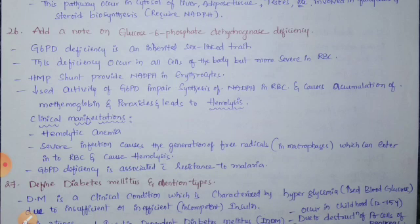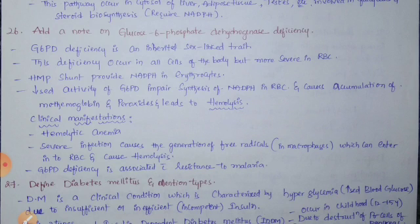HMP shunt provides NADPH in erythrocytes. Decreased activity of glucose-6-phosphate dehydrogenase (G6PD) is an inherited X-linked trait. This deficiency occurs in all cells of the body but is more severe in RBCs. Decreased G6PD activity reduces NADPH synthesis in RBCs, leading to accumulation of methemoglobin and peroxides, causing hemolysis.